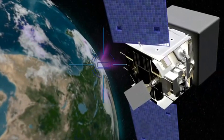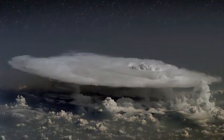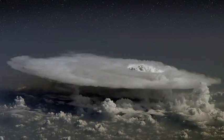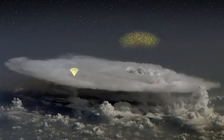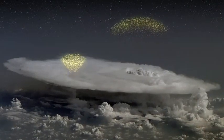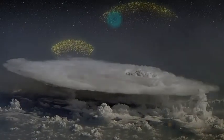Scientists believe that the TGF process begins in a thunderstorm's intense electrical field. Electrons within this field become accelerated upward. Above the storm, where the air is thin, the electrons can ramp up to speeds nearly as fast as the speed of light.